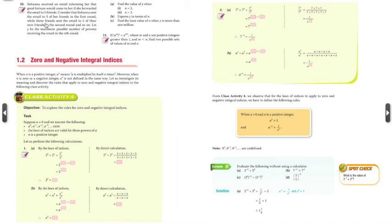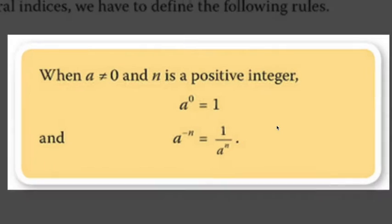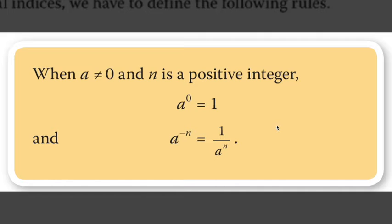Today I'll be going through Chapter 1.20 on zero and negative integral indices. The main work of this chapter will be these two rules. In Set 1 you may have come across this already. If the power is 0, it essentially equals 1. And if it's a negative power, you take the reciprocal — it'll be 1 over a to the power of n.